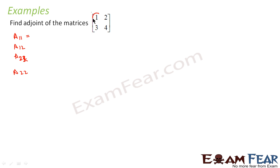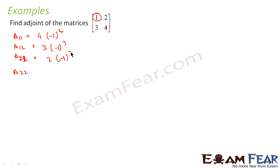A11: you take this element, ignore the other row and column, and four becomes A11. So A11 = 4 × (−1)^(1+1) = 4. A12: you ignore this row and column, you get three. So A12 = 3 × (−1)^(1+2) = −3. A21: you ignore this row and column, you get two. So A21 = 2 × (−1)^(2+1) = −2. A22: you ignore these values, you get one. So A22 = 1 × (−1)^(2+2) = 1.